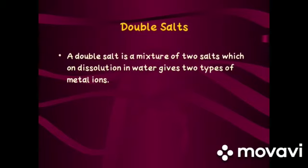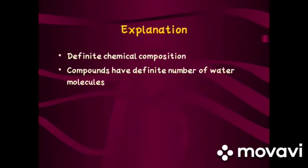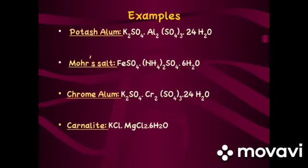After these three groups, we have another category: double salts. Double salts are crystalline compounds obtained when two specific salts are crystallized together — essentially a mixture of two salts which, on dissolution in water, gives two types of metal ions. These salts have a definite chemical composition and usually contain a definite number of water molecules. A typical example is potash alum: potassium sulfate · aluminium sulfate · 24H₂O, i.e., K₂SO₄·Al₂(SO₄)₃·24H₂O.